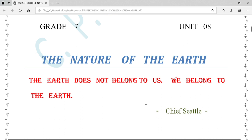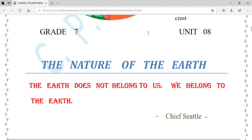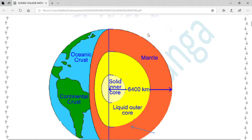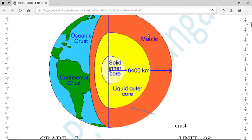Now look at this picture: internal structure of the earth. You can see the crust, which is divided into two: oceanic crust and continental crust, then the mantle, liquid outer core, and solid inner core.